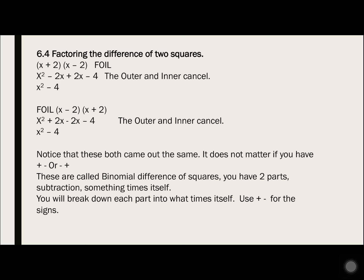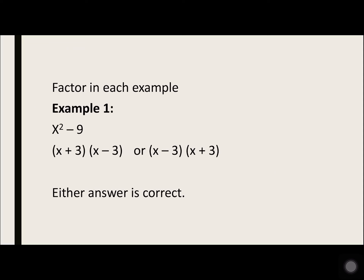These are called binomial difference of squares. You have two parts, subtraction, and something times itself. You will break down each part into what times itself, then use plus-minus for the signs. Example 1: x squared minus 9. x squared is x times x, and 9 is 3 times 3. You can either have x plus 3 times x minus 3, or x minus 3 times x plus 3. Either answer is correct.